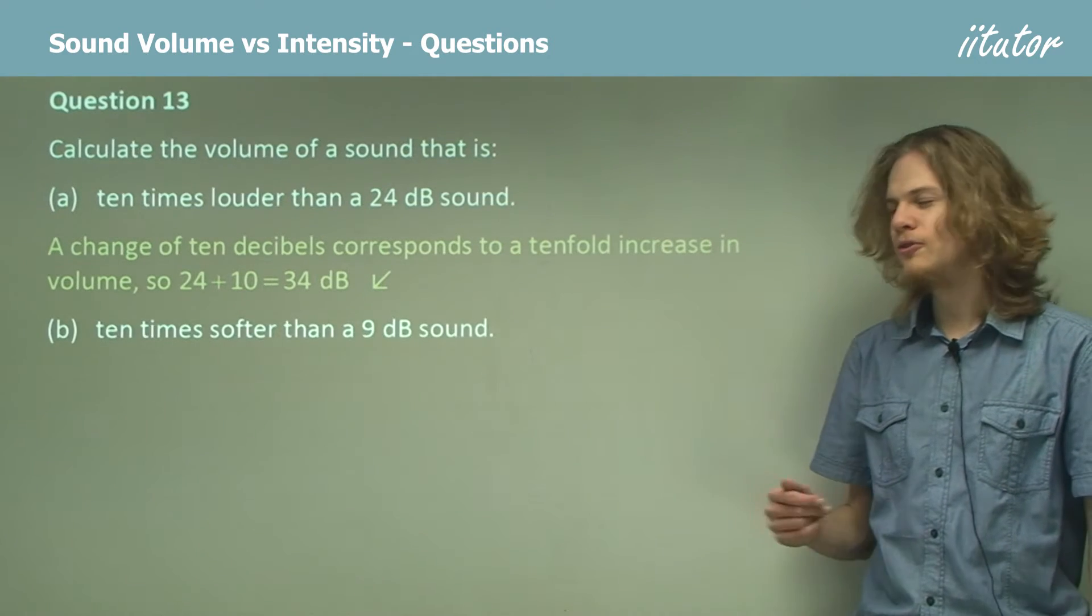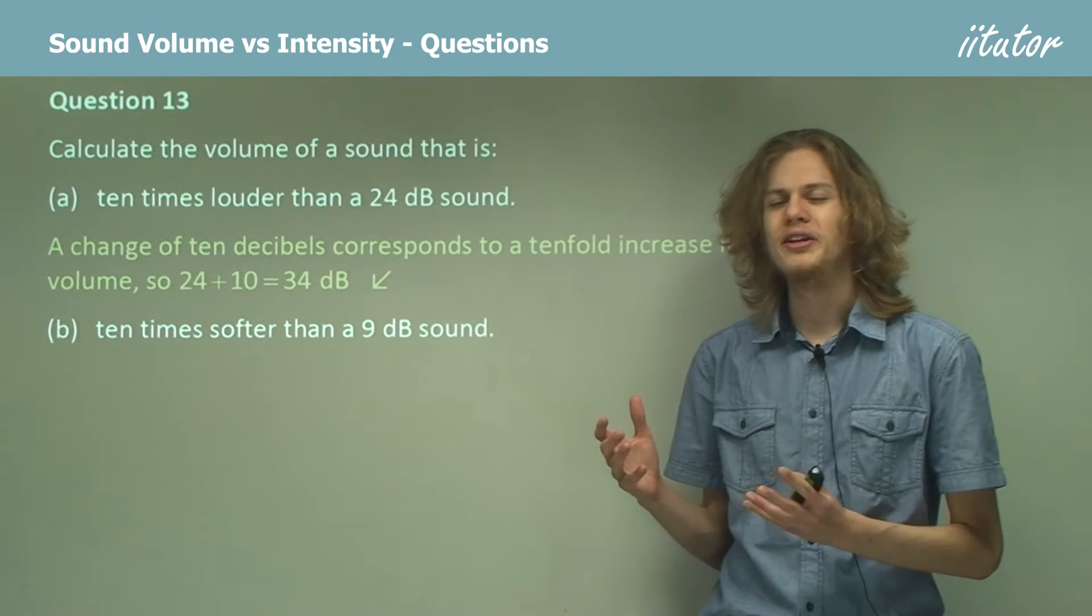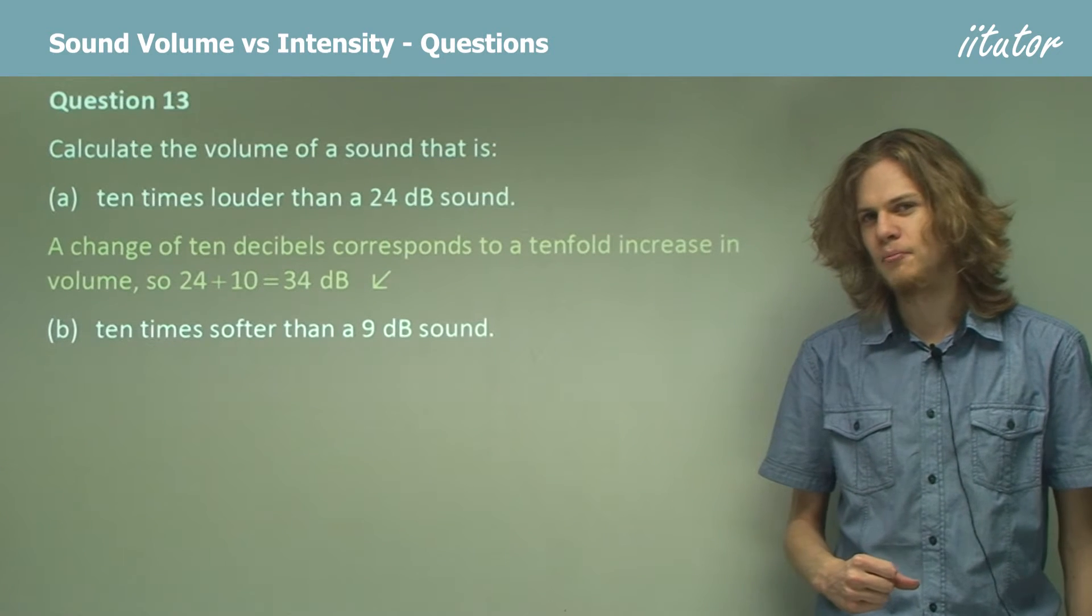How about 10 times softer than a 9 decibel sound? Well, if we want to get 10 times softer, all we need to do is subtract 10 decibels, right? So 9 minus 10 is, oh dear, we've got a negative number.